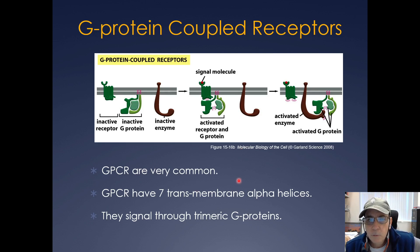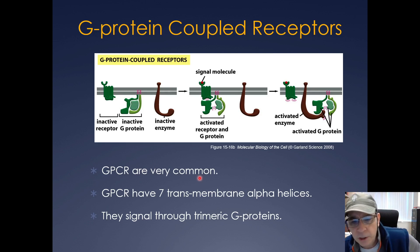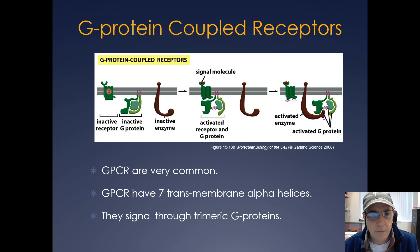Another very common receptor type is the G-protein coupled receptor, often abbreviated GPCR. There are over 700 different GPCRs in a mammalian genome. One characteristic feature is that they have seven transmembrane domains — seven transmembrane-spanning alpha helices.